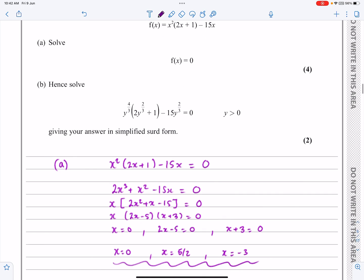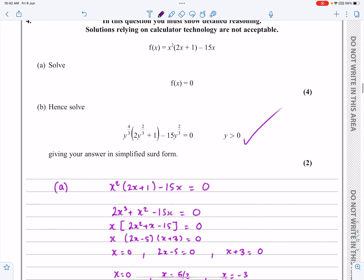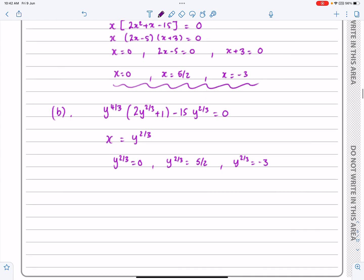Well, this is where I'm just going to quickly go back and check. Look, they've given me a range of values for y there. y's got to be greater than 0. So actually, that's going to get rid of two of these solutions straight away. This is not going to be in range because y is going to be equal to 0. This is not going to be in range because y is going to be a negative, which means I only now need to focus on y^(2/3) = 5/2.